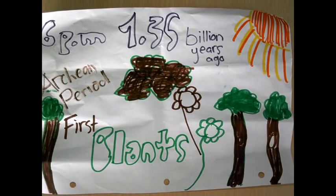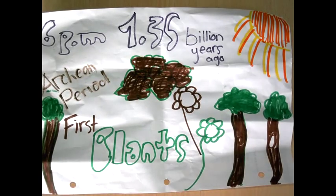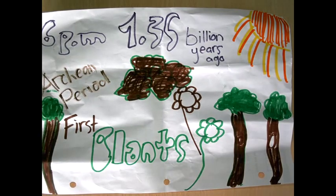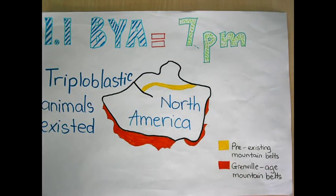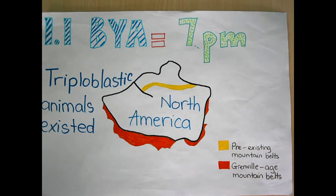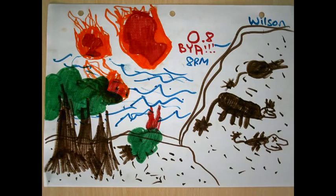1.35 billion years ago, at 6 p.m., it was the Archean period. There were first plants. Photosynthesis started at the end of the Archean period. 2.1 billion years ago, North America's craton began to split, then another continent collided with the eastern edge, raising a towering mountain belt. Surface rocks were buried to the depth of 26 kilometers. Scientists said that multicellular animals existed in this period.